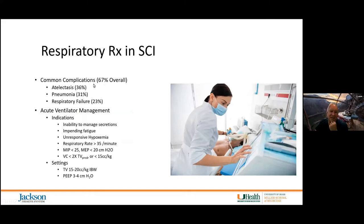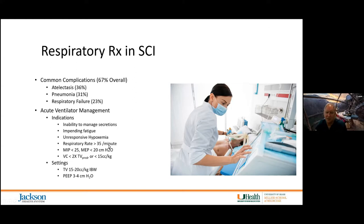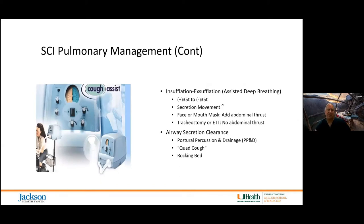There's a 67% likelihood of respiratory complications, particularly in the acute setting, because of atelectasis, subsequent pneumonia, and respiratory failure. In an upcoming lecture, we'll cover ventilator management strategies that take into account both neurogenic restrictive and neurogenic obstructive lung disease, recognizing that many pulmonary colleagues who haven't worked with SCI won't be comfortable with these settings — particularly the tidal volumes and PEEP for spinal cord injury — so it will be important that you know how to explain why these are necessary.